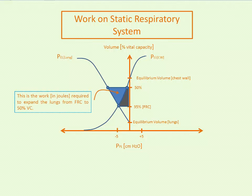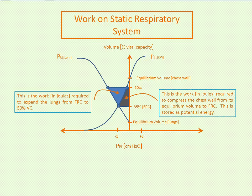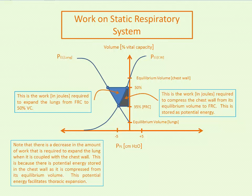The work in joules to expand the lungs from FRC to 50% vital capacity is this triangular envelope. The work required to compress the chest wall from its equilibrium volume to FRC is potential energy stored in the chest. Coupling the lung with the chest wall decreases the net work required to expand the lung, because that stored chest wall potential energy assists expansion.